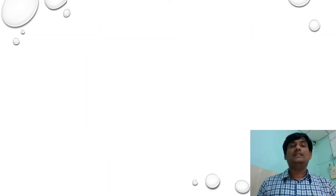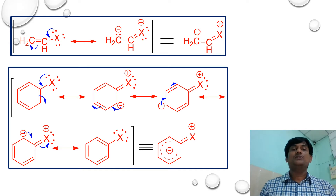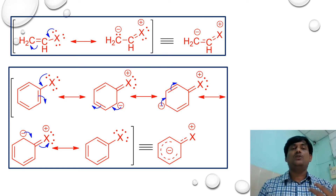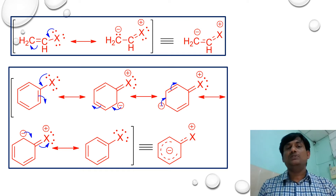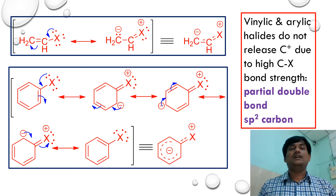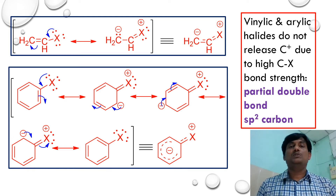In the case of vinylic and arylic (phenyl) halides, the non-bonding electrons on the halogen participate in resonance, creating partial double bond character between carbon and halogen due to delocalization. This makes the carbon-halogen bond stronger than in alkyl halides. As a result, vinylic and arylic halides do not generate a more stable carbocation, so they do not readily undergo SN1 reactions.